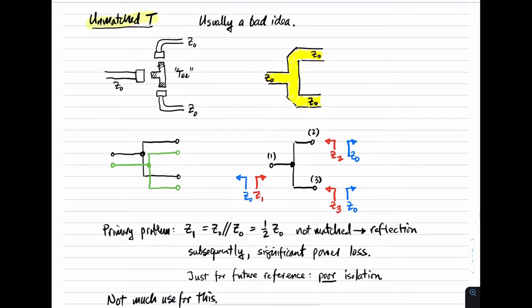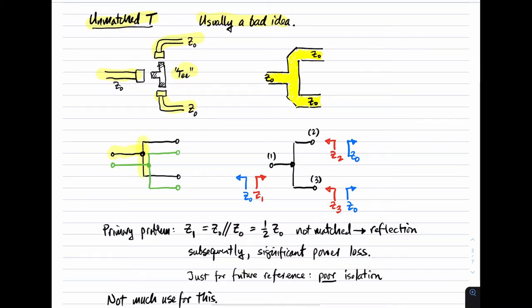First, let's talk about the unmatched T. What I'm about to show is usually a bad idea — I'm showing it because it's the simplest possible thing to do. You can imagine coax cables, each having a characteristic impedance of Z₀, and one thing we might consider doing is simply connecting them through a T, which is just a three-port device. We simply combine the center conductor on all three ports and similarly the shield on all three ports. This is the simplest possible way to combine these three cables together.